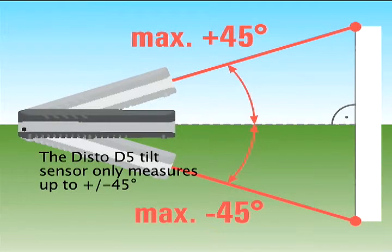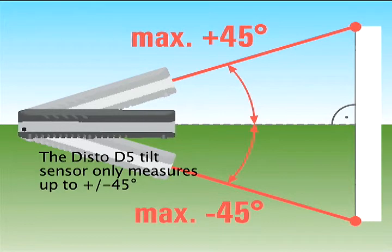Note: the Disto D5 tilt or angle sensor only measures up to plus or minus 45 degrees and cannot be used for tilt, indirect, or trapezoid functions that require measuring angles greater than this limit, such as a steep roof.